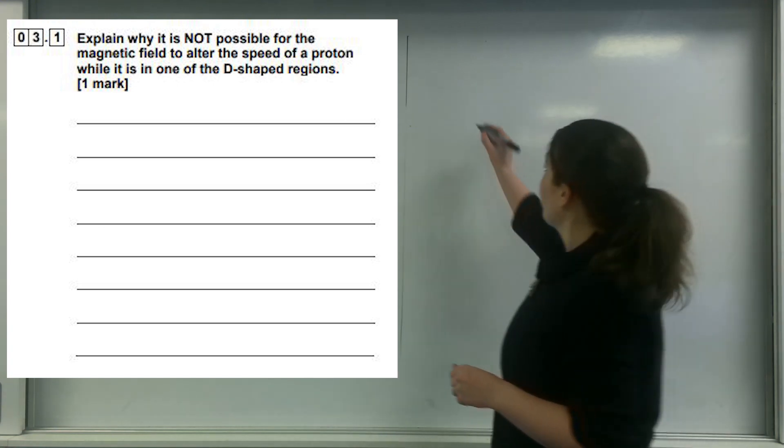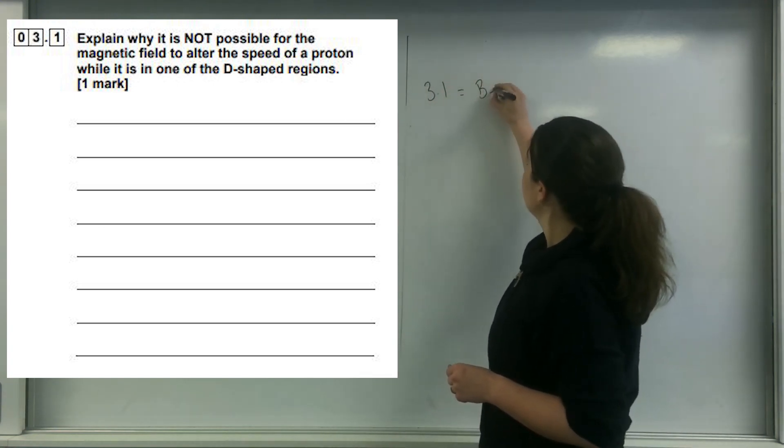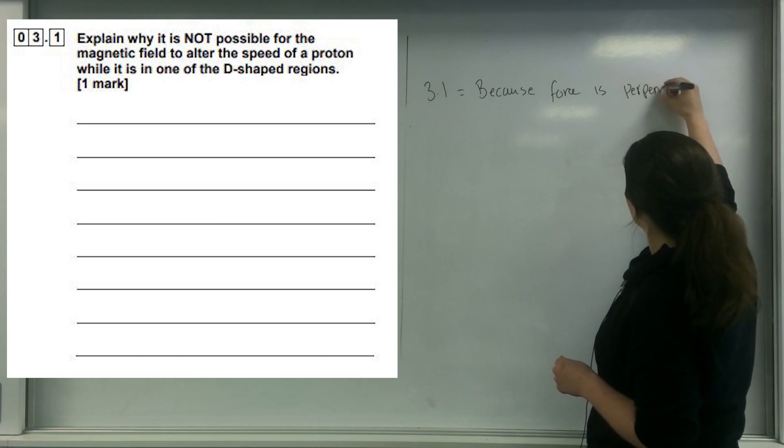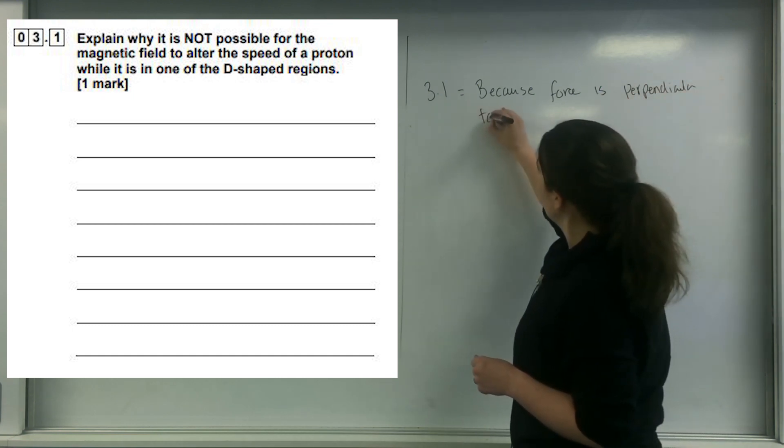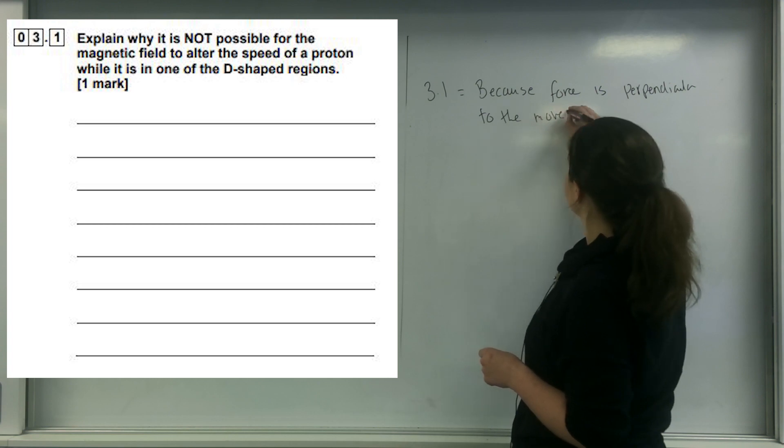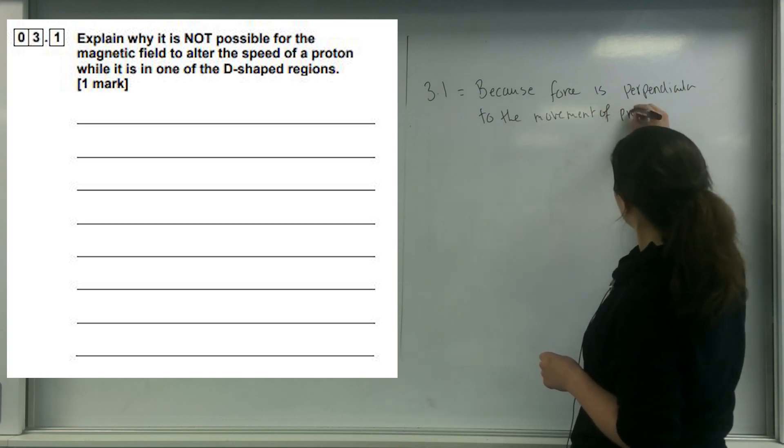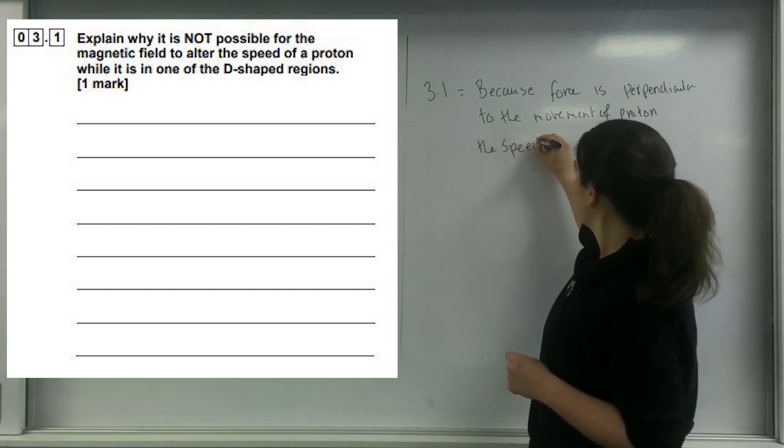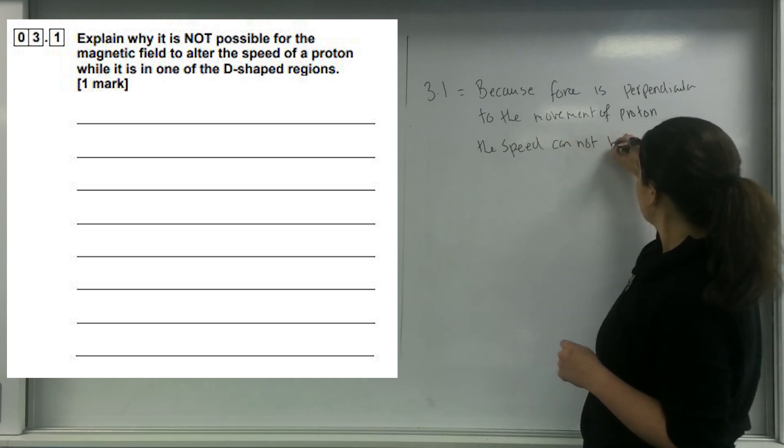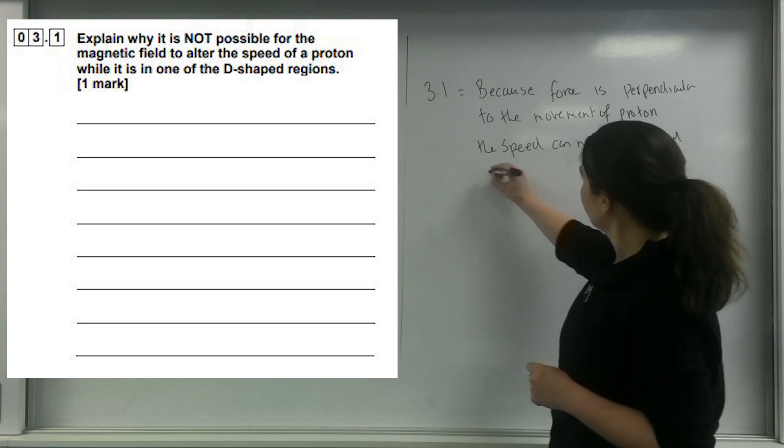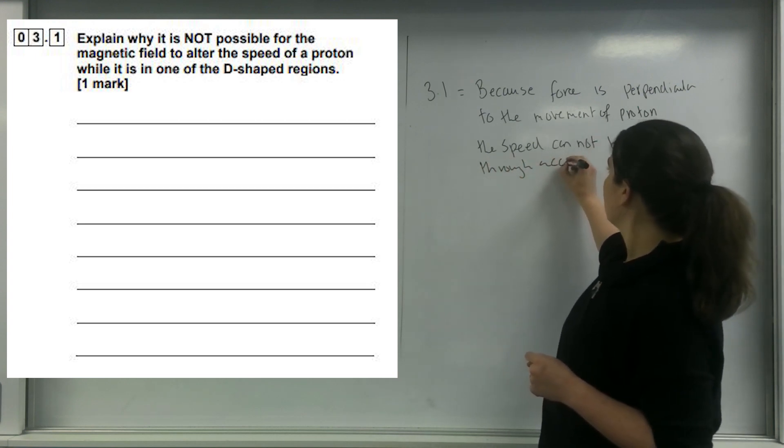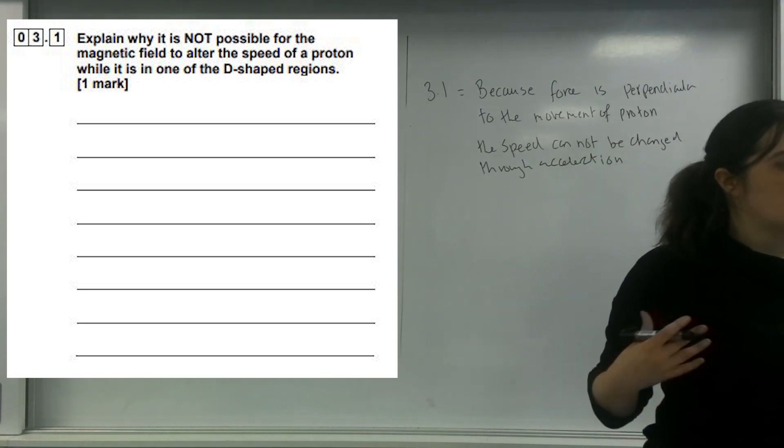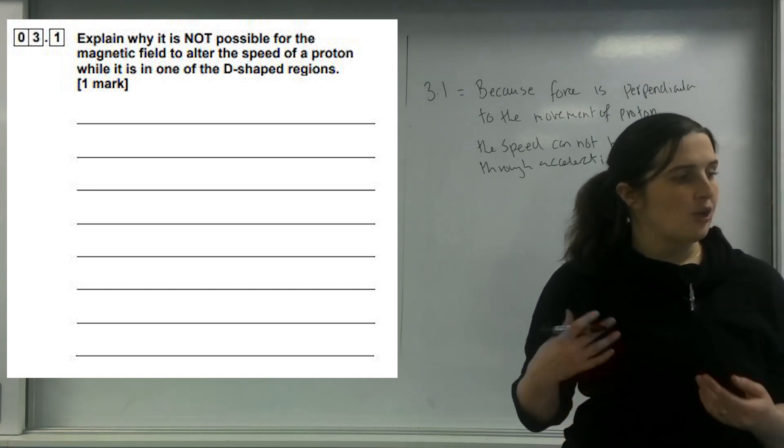This is actually the answer for 3.1. Because the force is perpendicular to the movement of the proton, the speed cannot be changed through acceleration. So it's not possible because the force is perpendicular to the motion. It can only change the particle's direction, no work is done.